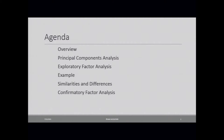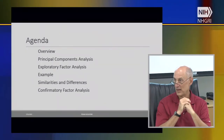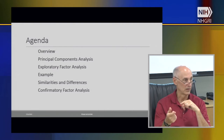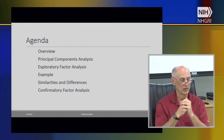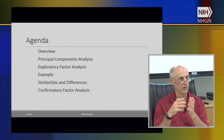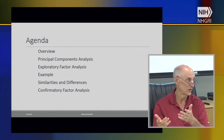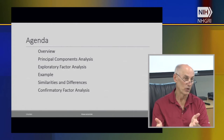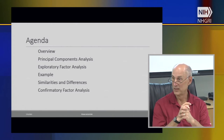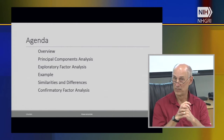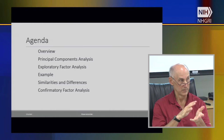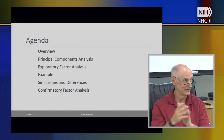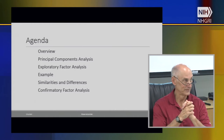I'm going to cover the similarities first, and then look at specifics for each of principal components and exploratory factor analysis. I've brought an example — the data is real but it's contrived in the sense that you probably wouldn't use both methods on it. However, it provides a great example of what happens when you use different methodologies so you can really see how things are different. Then I'll summarize similarities and differences, and if we have time we can touch on confirmatory factor analysis, which is related but a separate discussion.